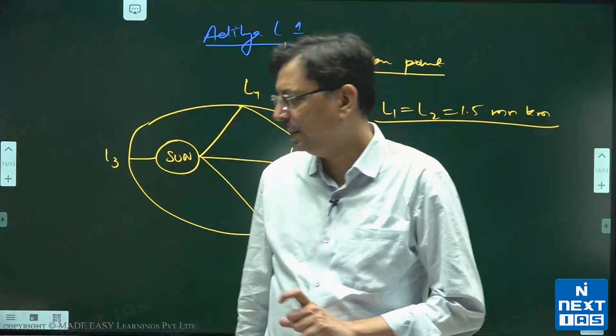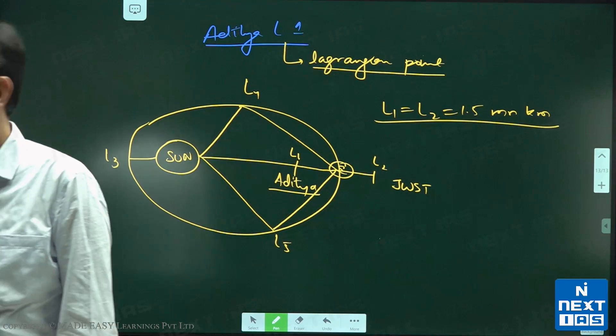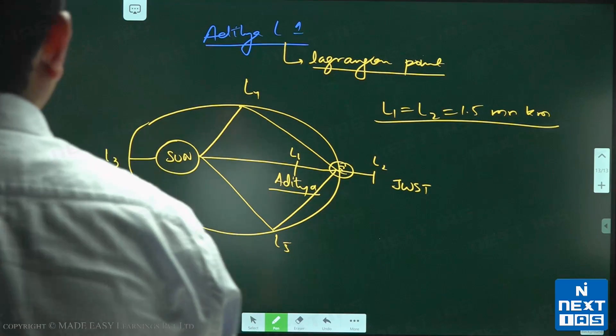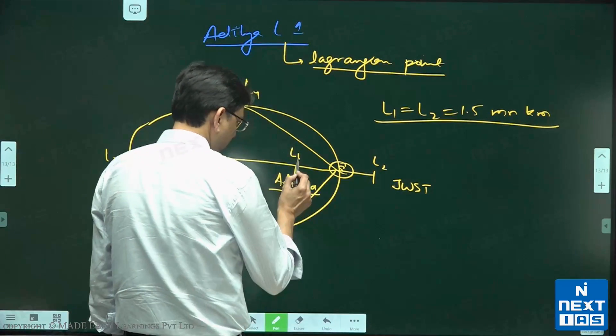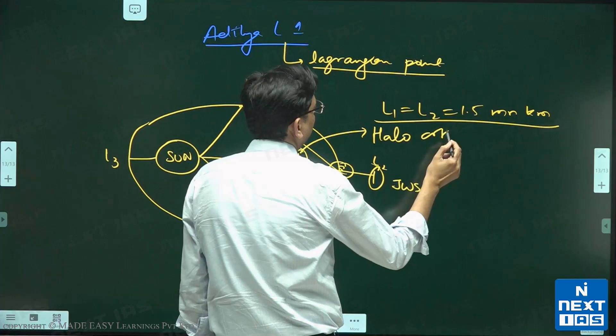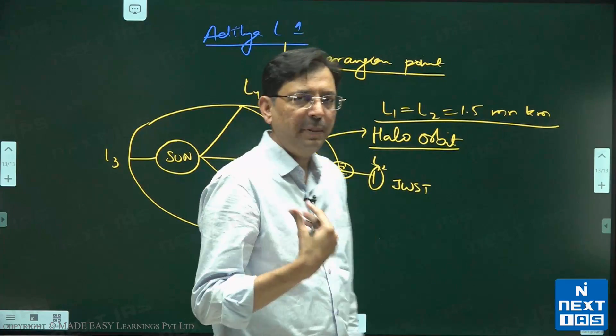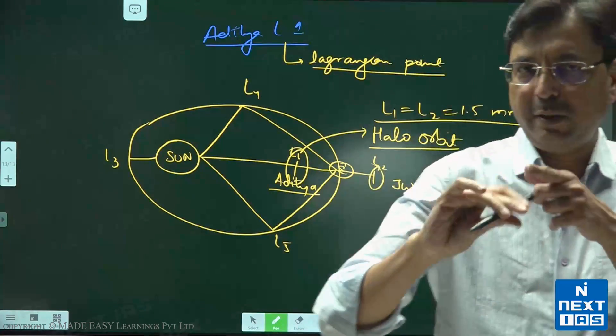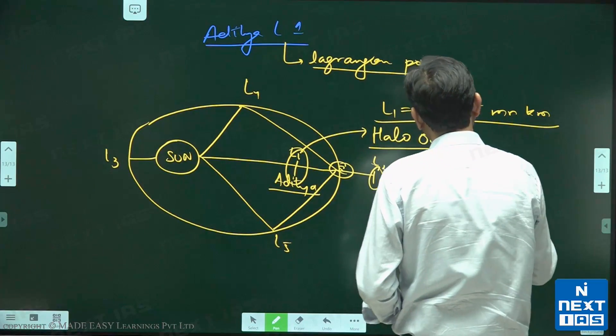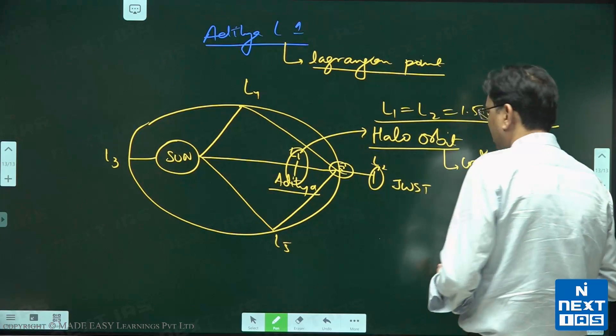So Aditya, we have placed in these orbits here. These orbits are known as halo orbits. Halo orbit means they are moving around a Lagrangian point like this, and it allows continuous observation of the Sun.